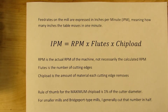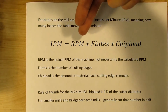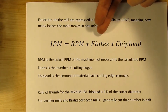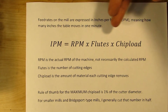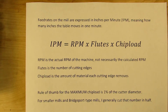There's a simple formula for figuring out what your IPM should be — inches per minute. The formula is: IPM equals your RPM times the number of flutes on your cutter times the chip load. The RPM used is the actual RPM of the machine, not the calculated RPM from your SFM formula.